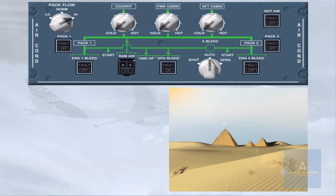Occasionally, with a full passenger load and high ambient temperatures, it may be necessary to select high pack flow and cold to reduce the cabin temperature. Using high pack flow will increase the bleed demand from the engines and use more fuel. Once airborne, the flow selector should be returned to normal and the temperature selectors adjusted as required.